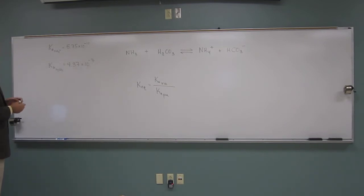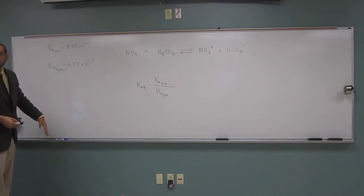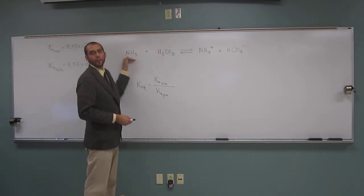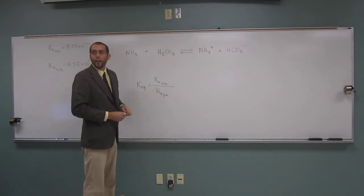So, now we've got to figure out, well, it's a good thing they gave us these two Ka's, right? So we don't have to look on a list, but which one of these is the acid, NH3 or H2CO3? H2CO3. How do you know that?